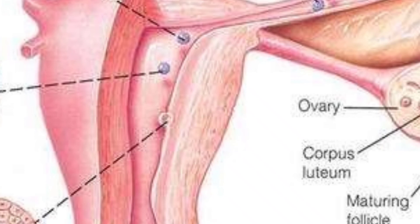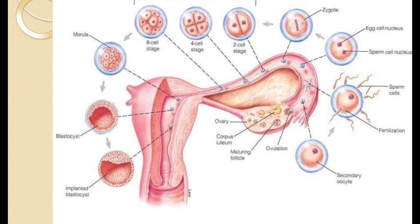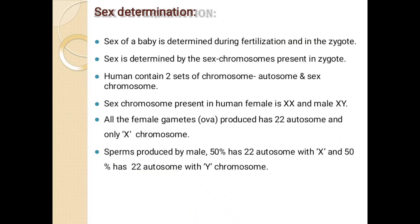The blastocyst becomes embedded in the endometrium of the uterus — this endometrium layer is where the blastocyst attaches. This process is called implantation. When implantation occurs, pregnancy begins.